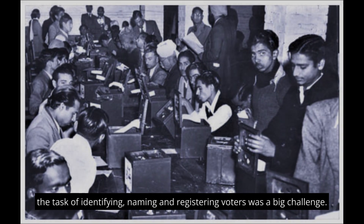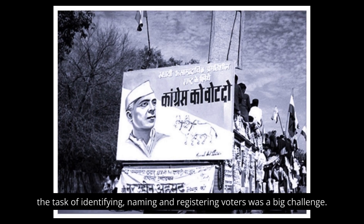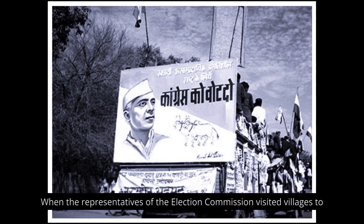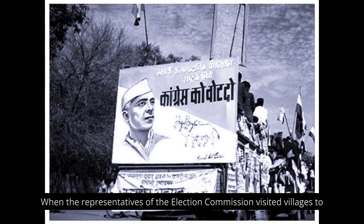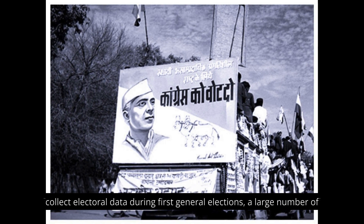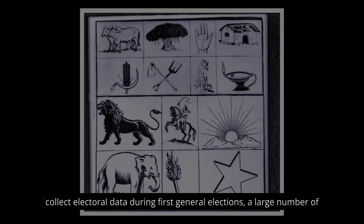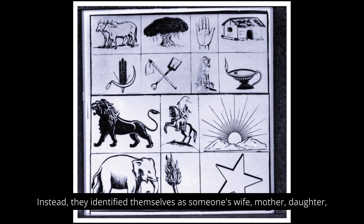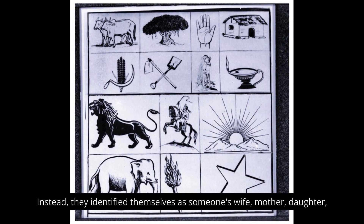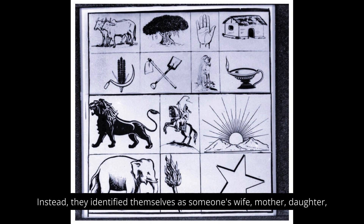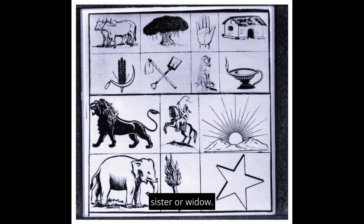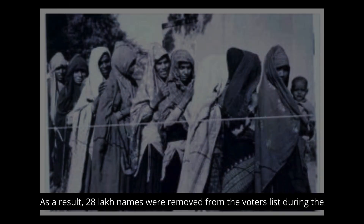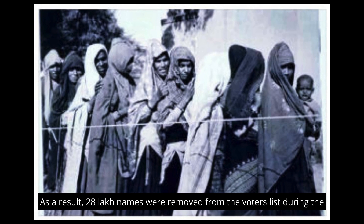The task of identifying, naming, and registering voters was a big challenge. When representatives of the Election Commission visited villages to collect electoral data during the first general elections, a large number of women refused to share their names with strangers. Instead, they identified themselves as someone's wife, mother, daughter, sister, or widow. As a result, 28 lakh names were removed from the voters' list during the first election.